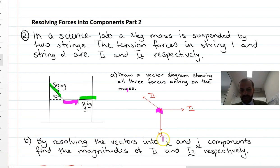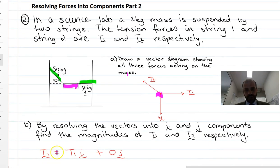So by resolving the vectors into i and j components, find the magnitudes of tension one and tension two respectively. Alright, so let's take a look. Tension one is going to be equal to tension one in the i component, but it's a string that's going straight across. So there's no tension in the j component. Alright, so pretty straightforward so far.